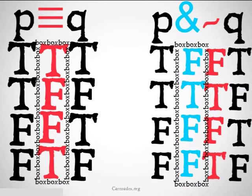Then we will go ahead and compare the truth values. Here we see that while there is one case where they're both false — so these propositions are not contradictory — there is no case in which they are both true, so they are not consistent; they are inconsistent.